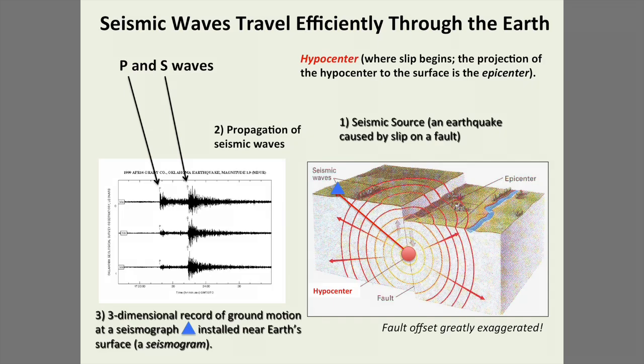Seismic waves travel very efficiently through the Earth. The hypocenter is the point on what may be a large earthquake fault where the slip starts, and the projection of the hypocenter to the surface is called the epicenter. We make a three-dimensional recording of the ground motion called a seismogram. On the seismogram, you can see two distinct arrivals of energy — P and S waves — separated by seconds or many minutes depending on how far away the earthquake is. From these P and S waves, we can learn a lot about the source of the event.